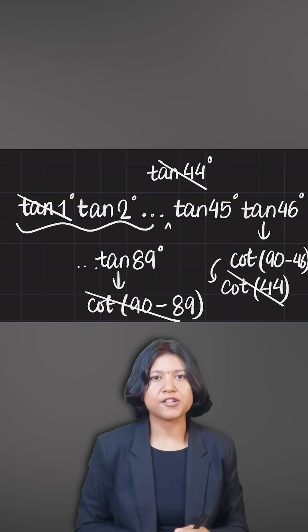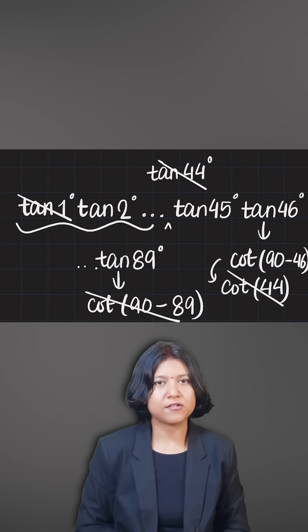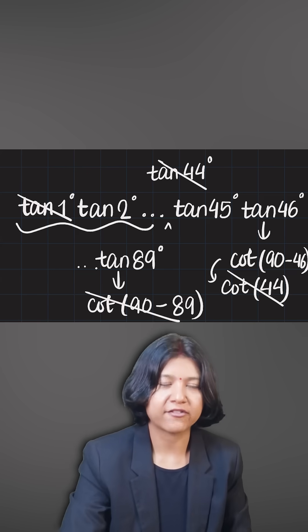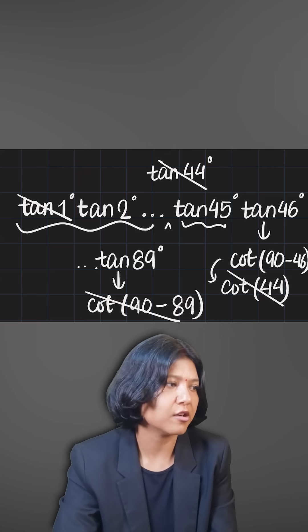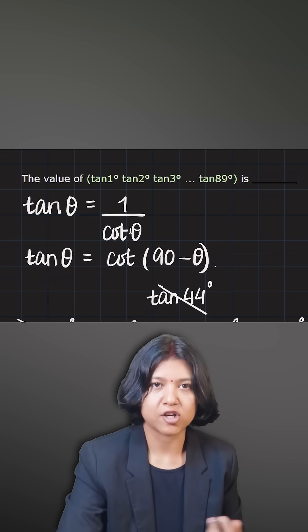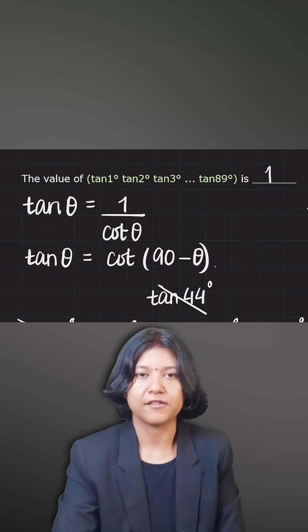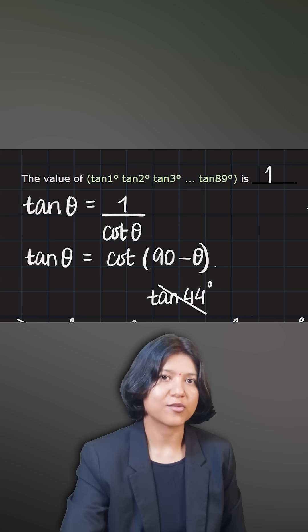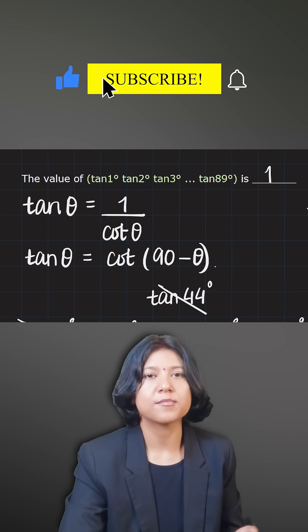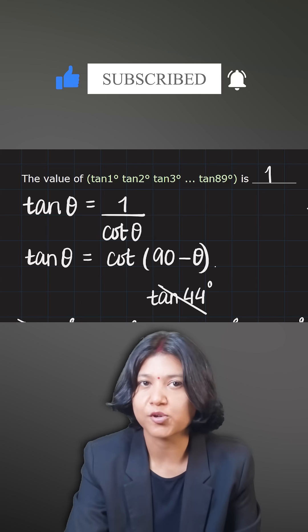So you will see a pattern here that each term will cancel out with the reciprocal term, and after cancellation we just have tan 45 remaining, which is 1. You will see automatically that this expression has nothing other than giving you just 1. Eventually the answer will just be 1 because the terms will cancel out because of the reciprocal property.